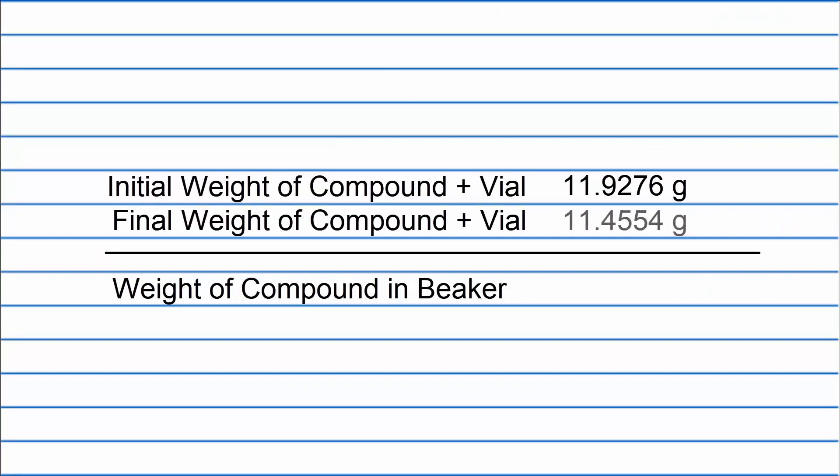The mass of compound transferred to the beaker is the difference between the first and second readings of the container. You now know how to weigh by difference.